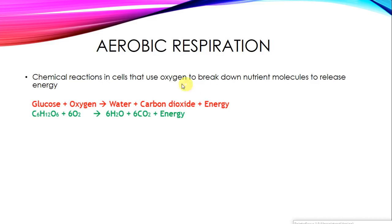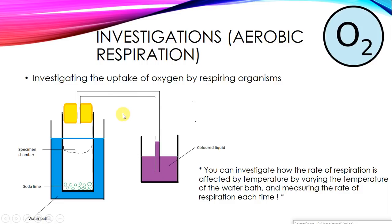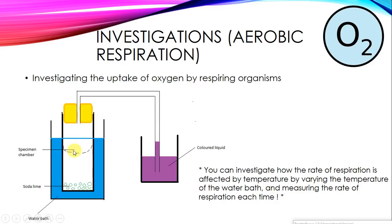There are certain investigations we can put in place in order to study this chemical reaction. For example, we can investigate the uptake of oxygen by respiring organisms. Take a look at this diagram here, which is the diagram of a basic simple respirometer. You've got a test tube, or any type of tube really, where you've got a specimen chamber — some place that you can put in the organisms you are investigating.